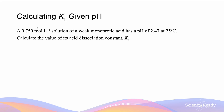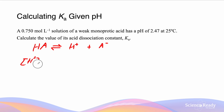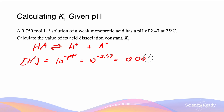For the next question: a 0.75 mol/L solution of a weak monoprotic acid has a pH of 2.47. Calculate the acid dissociation constant Ka. The generic acid HA dissociates as a weak acid into H⁺ and A⁻. We can work out the H⁺ concentration using the pH: [H⁺] = 10^(−pH) = 10^(−2.47) = 0.00339 mol/L.